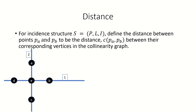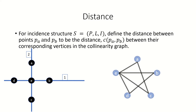For example, in this incident structure which we saw earlier, what's the distance between points A and B? First, bring up the collinearity graph. Then, find the distance between the vertex corresponding to point A and the vertex corresponding to point B. In this case, that distance is 2. As another example, the distance between points A and C is 1, as their corresponding vertices are adjacent in the collinearity graph.